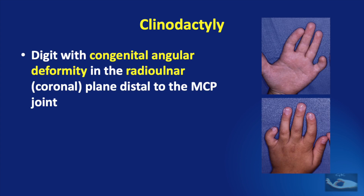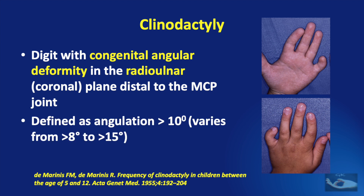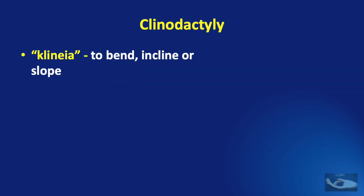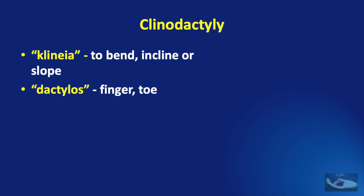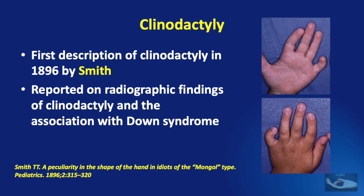The term congenital clinodactyly refers to a digit with congenital angular deformity in the radio-ulnar or coronal plane, distal to the metacarpophalangeal joint, defined as an angulation of more than 10 degrees (varying from more than 8 to more than 15 degrees in different definitions). The word is derived from Greek: klynia, meaning to bend, incline or slope, and dactylos, meaning finger or toe. The first description of clinodactyly was in 1896 by Smith, who reported on radiographic findings and the association with Down syndrome.